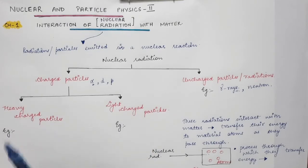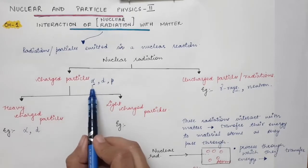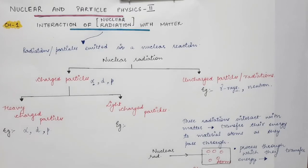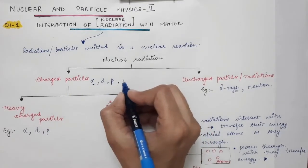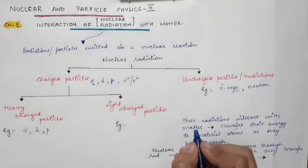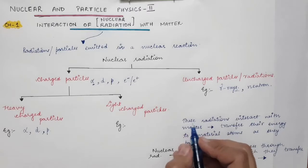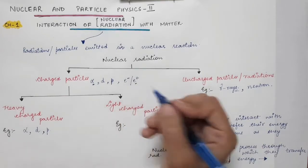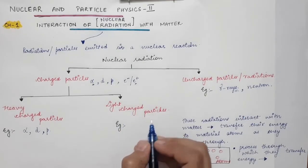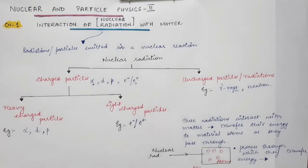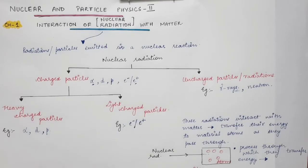Heavy charged particles include the alpha particle, deuteron, and proton. Another example of charged particles — which I should mention — is the electron and its antiparticle, the positron. We will discuss what an antiparticle is in the chapter on particle physics. Electrons and positrons come under light charged particles, while alpha particle, deuteron, and proton come under heavy charged particles.